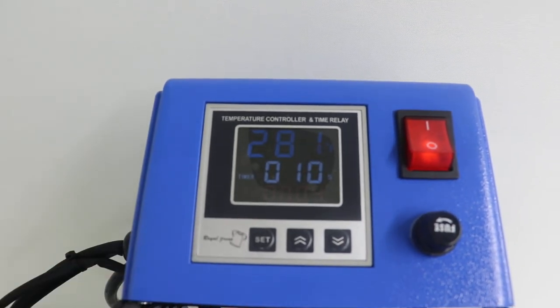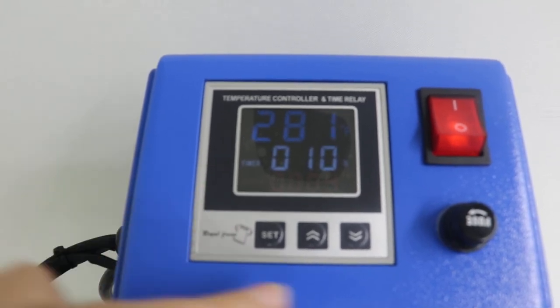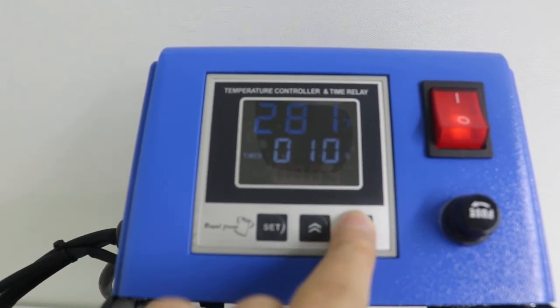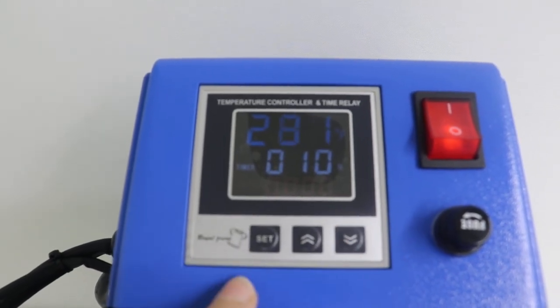This is the counter. Once the machine printed one time, it will count to 1. If we want to clean it up, keep pressing the button. For 5 seconds it will become 0. It's 0 now.